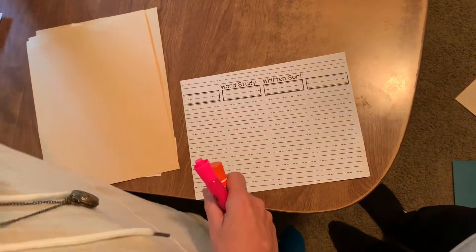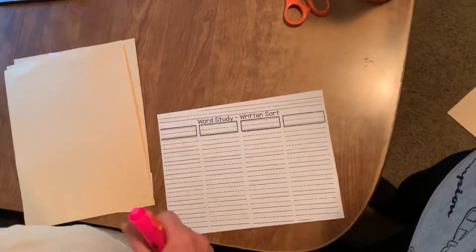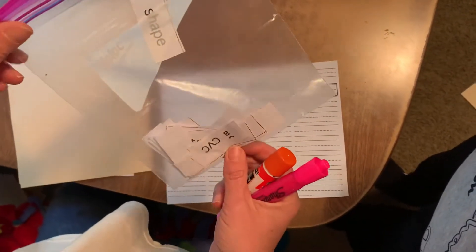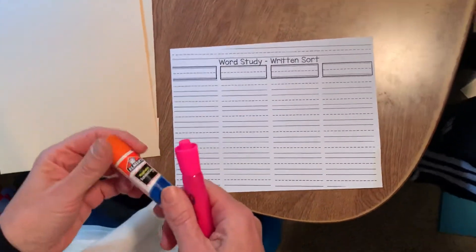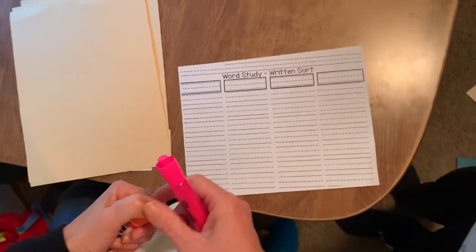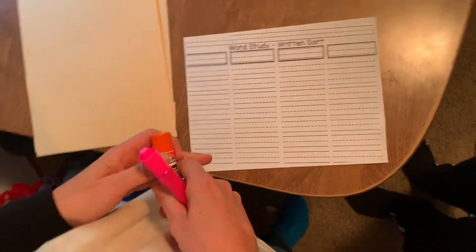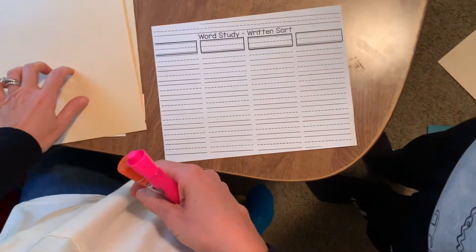They're going to take their words that are located in their Ziploc baggie that we cut out on Monday. There's three different sorts going around this week in first grade. Your child has one of them. They're going to glue them down on this paper, this Manila paper.